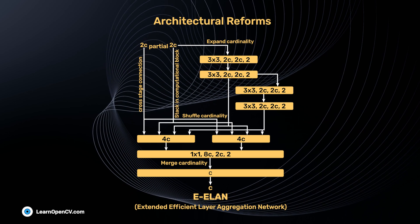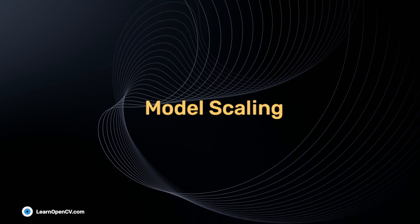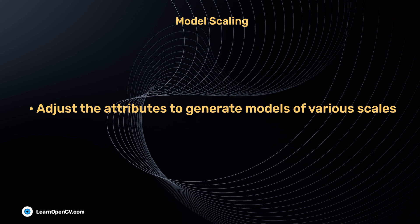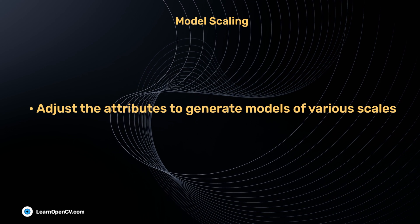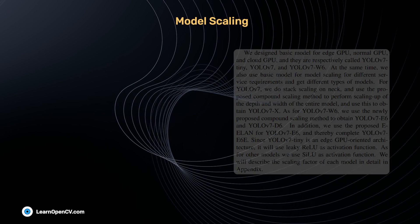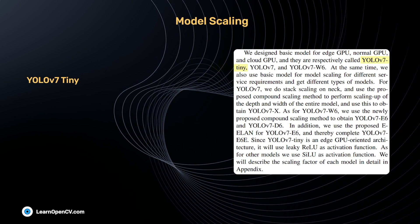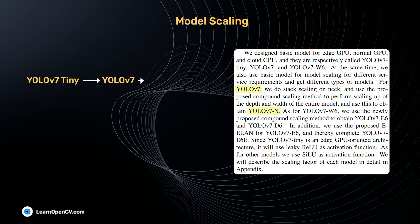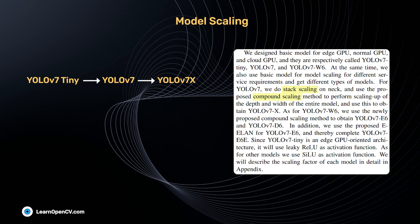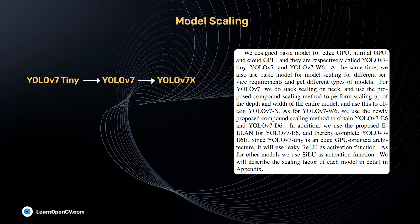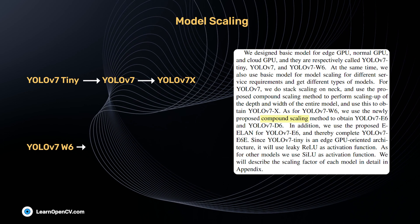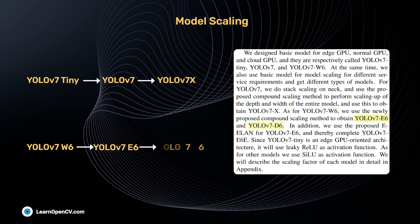The next architectural reform is model scaling. The main purpose of model scaling is to adjust the attributes to generate models of various scales. For example, we use YOLO v7 Tiny to generate YOLO v7 and v7 X using stack scaling and compound scaling. Similarly, we start with YOLO v7 W6 and apply compound scaling to generate E6 and D6 models.